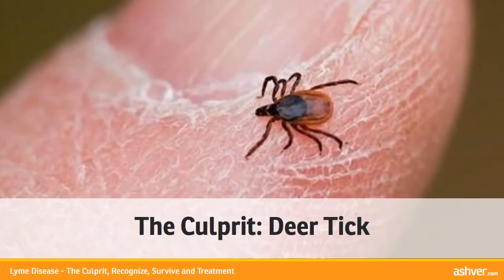Its scientific name is Ixodes scapularis, and it is a three-host tick. It feeds upon a different host animal during each mobile stage: larvae, nymph, and adult.